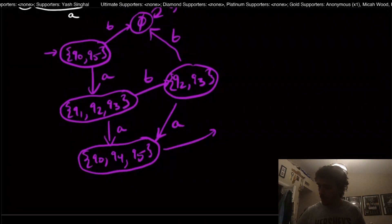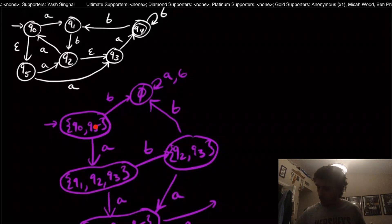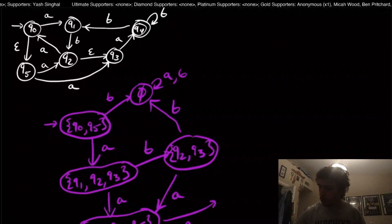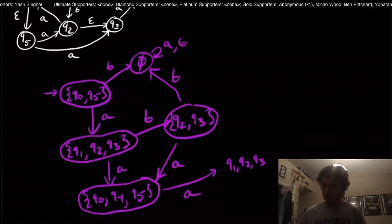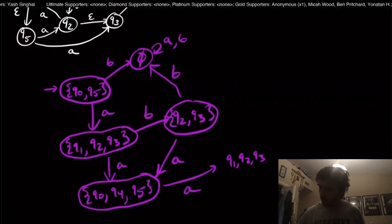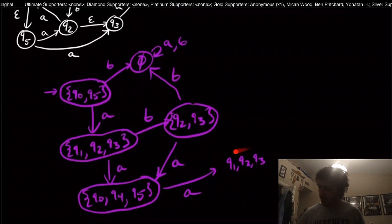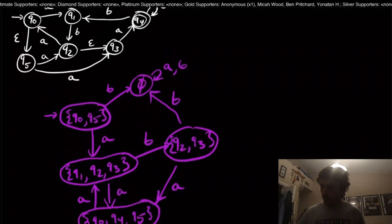Now from {q0, q4, q5} on input A: q0 and q5 go to {q1, q2, q3} on A, and q4 doesn't go anywhere on A. So this state on A goes to {q1, q2, q3}, which is the state we've already made — that closes off nicely.